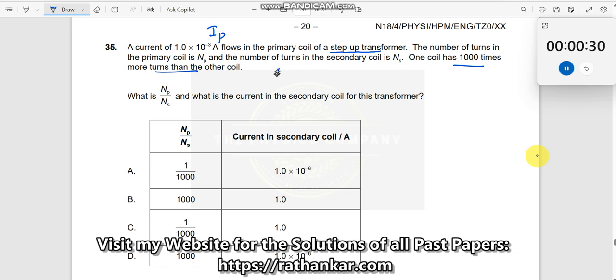But it says that somewhere NP and NS are related by this way. Now, how do you understand which one is it? You can get it from step-up transformer. The term step-up transformer tells you that the secondary will have larger turns than the primary. Which means using this definition you can now write NS by NP is equal to 1000.